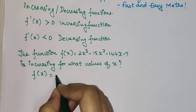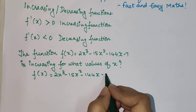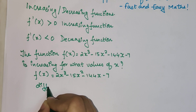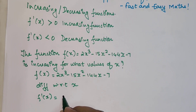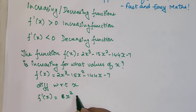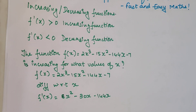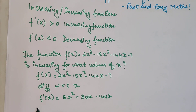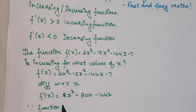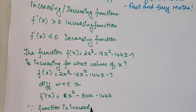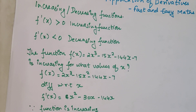First, we have f(x) = 2x³ - 15x² - 144x - 7. In order to find f'(x), we will differentiate with respect to x. So f'(x) = 6x² - 30x - 144. Since the function is increasing, therefore f'(x) is greater than 0.